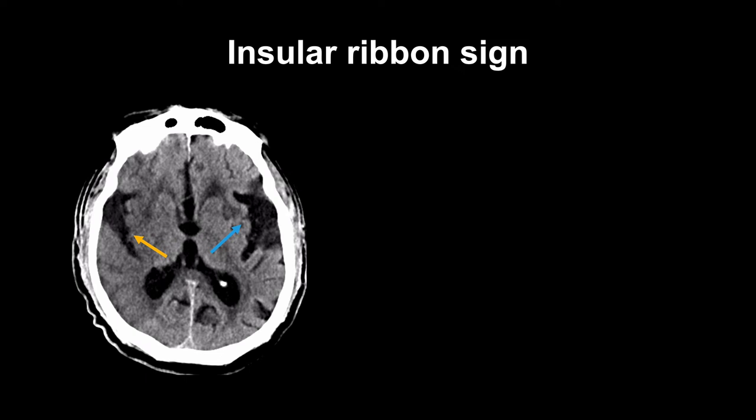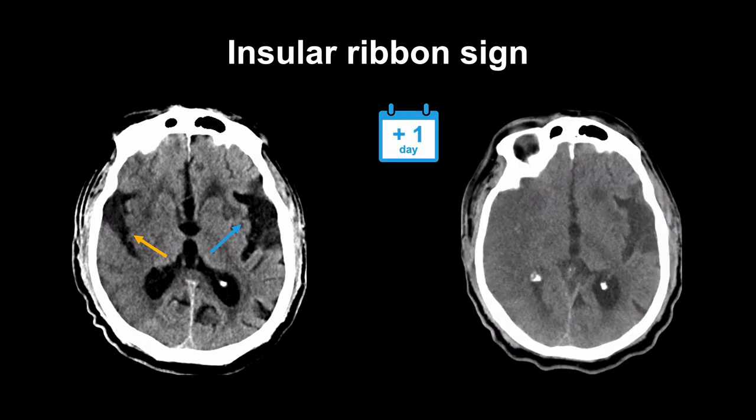Note the change in appearance in this patient's CT scan just one day later. That early insular ribbon sign was just a hint of what was to come, and this scan demonstrates the true size of the infarction. It should serve as a reminder that the detection of acute infarcts on CT depends on recognition of subtle changes in tissue attenuation.